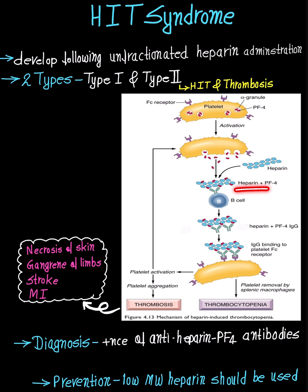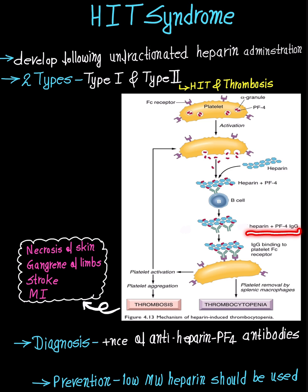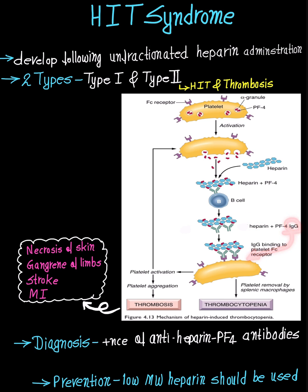The heparin-platelet factor 4 complex induces B cells to produce IgG antibodies against it. This leads to formation of a heparin-PF4-IgG complex, and the IgG of this complex binds to the FC receptor present on the platelet surface.